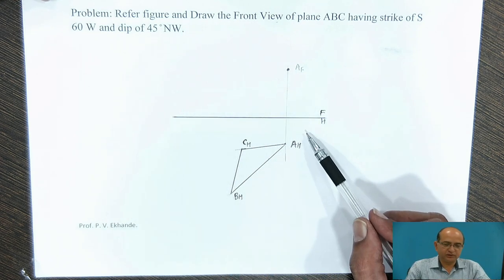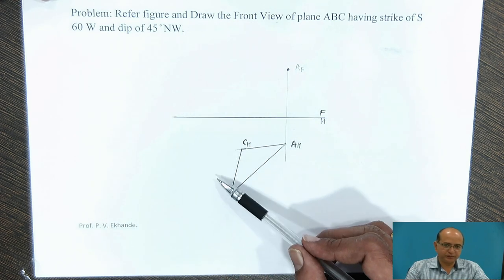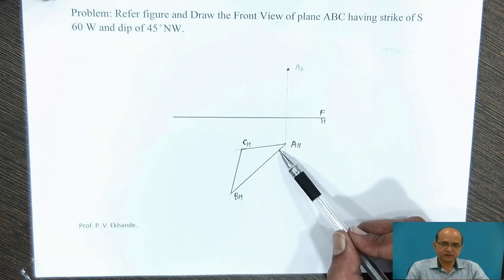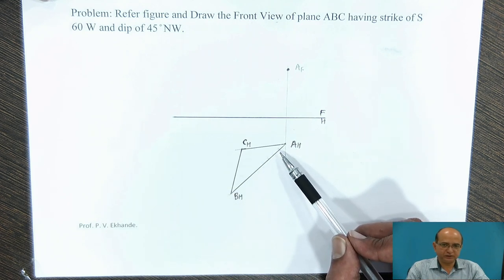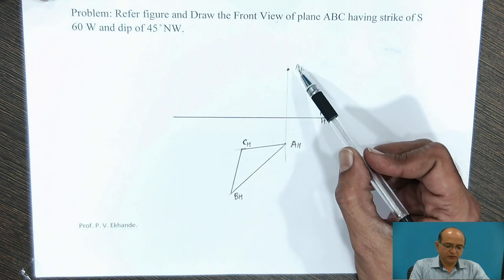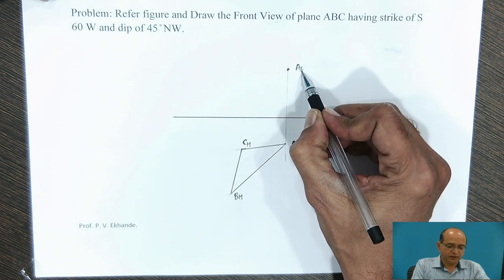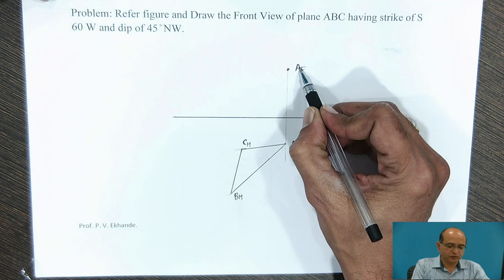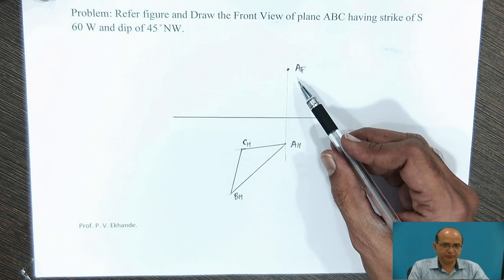When we consider the given figure, the top view has been given as AH, BH, and CH. For this plane ABC in the front view, the point AF is given — meaning corner A of the plane, its position is given.